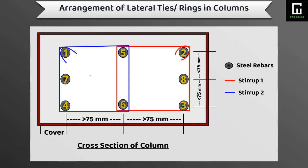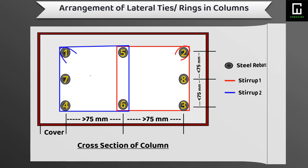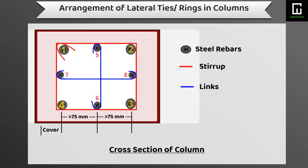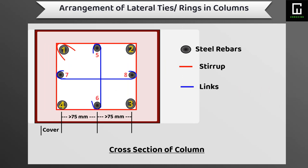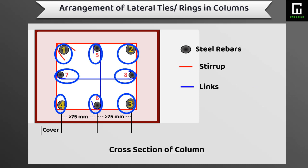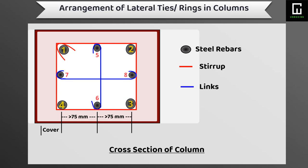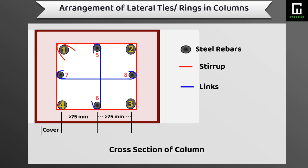For this size of column, we can provide two regular size of stirrups or ties only. Coming to the fifth type of column, the column has more than 150 mm by 150 mm in cross-sectional dimension with eight numbers of longitudinal bars. Here we can provide the corner bars with a regular size of stirrup, and as in the picture, bar numbers one, two, three, and four are connected with one regular size stirrup.